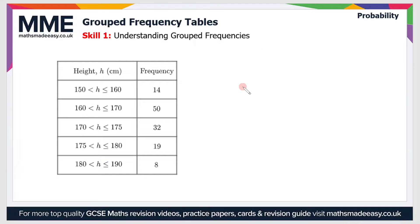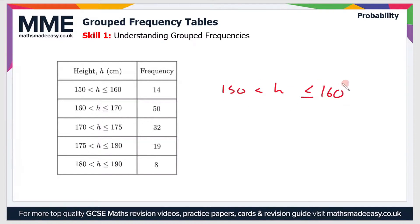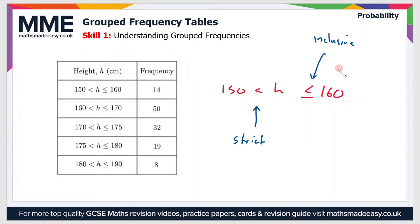So let's take a look at the notation that we'll be using for grouped data. If we take a look at the first row, which is 150 to 160, what this means is that the height h falls between the values of 150 and 160. We use these inequality symbols, and there's a reason for that. The one on the left is a strict inequality, so it doesn't include the value of 150, whereas the one on the right is an inclusive inequality, so it does include the value of 160.